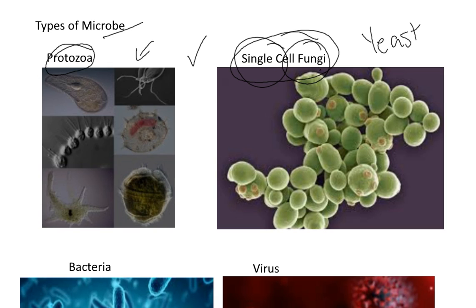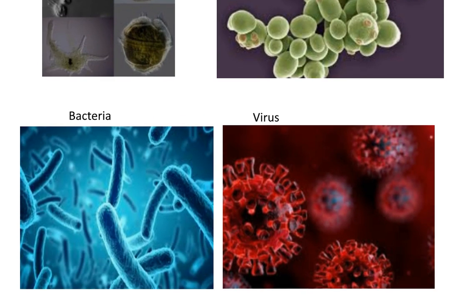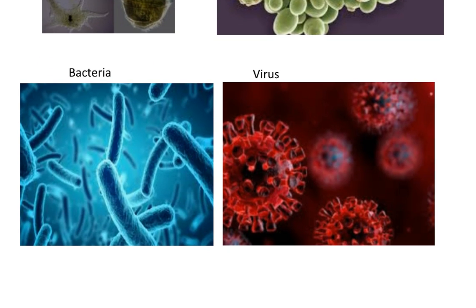So Leeuwenhoek saw both of these groups. Another group that Leeuwenhoek saw were the bacterial cells — he was the first person to see these as well. In this image, we have the bacteria known as E. coli. This is a famous bacteria often associated with diseases such as food poisoning.